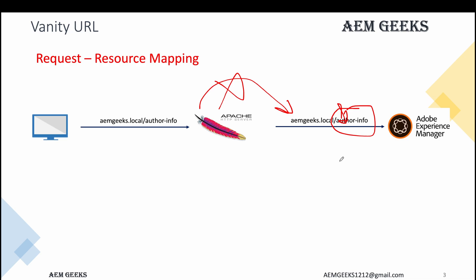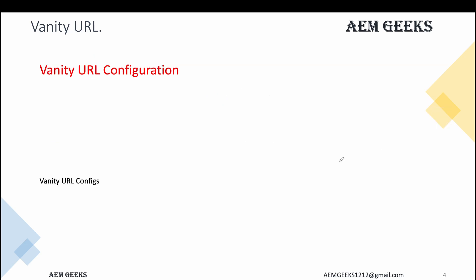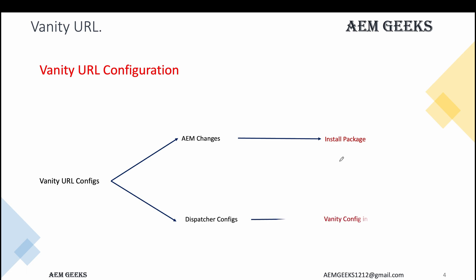Now the actual concept comes into picture. Setting up the vanity URL in AEM was straightforward, but now you must understand what to do at the dispatcher level — across the whole environment: author, publish, and web server. You need to make configurations in two places: one on AEM publish, and one in your dispatcher configuration. On AEM publish, you will install a package available from the Adobe Software Download Center — I'll give you the link. You just install that package and you're done with AEM configuration.